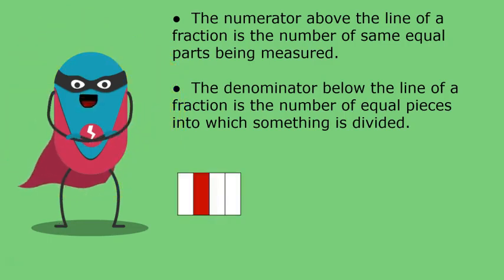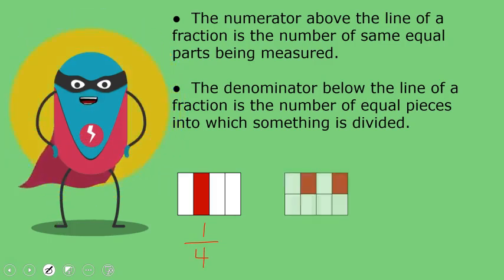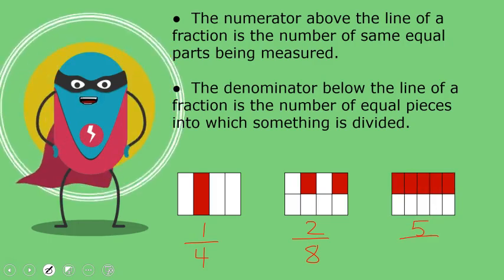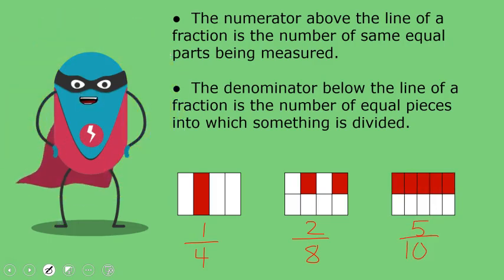Take this model for example. One part shaded out of four equal parts, so we get one fourth. Here we have two parts shaded out of eight equal parts, so we get two eighths. And last, we have five parts shaded out of ten, which would give us five tenths.